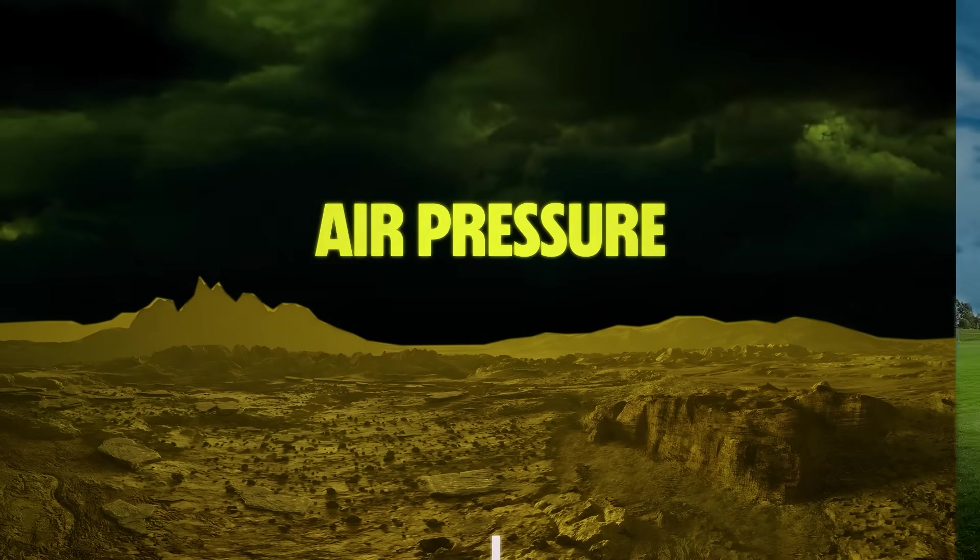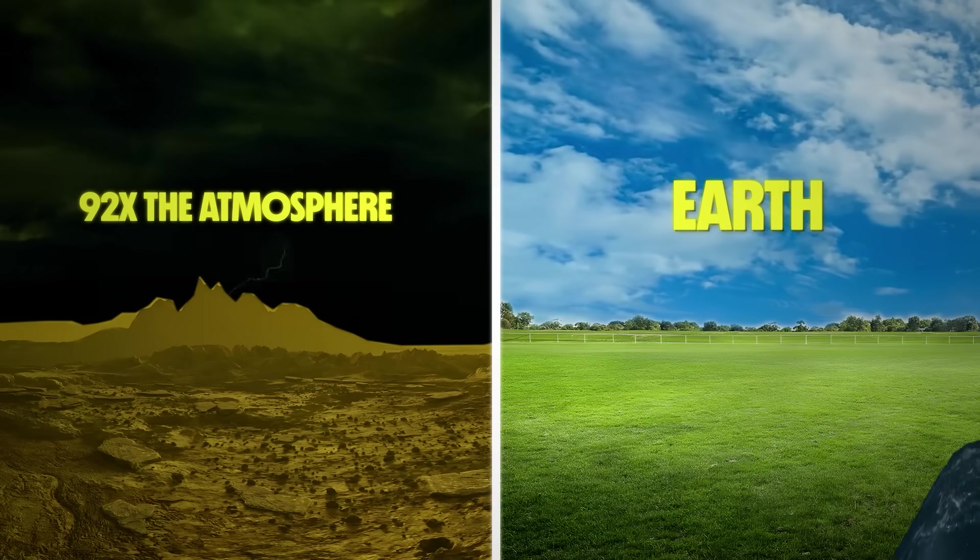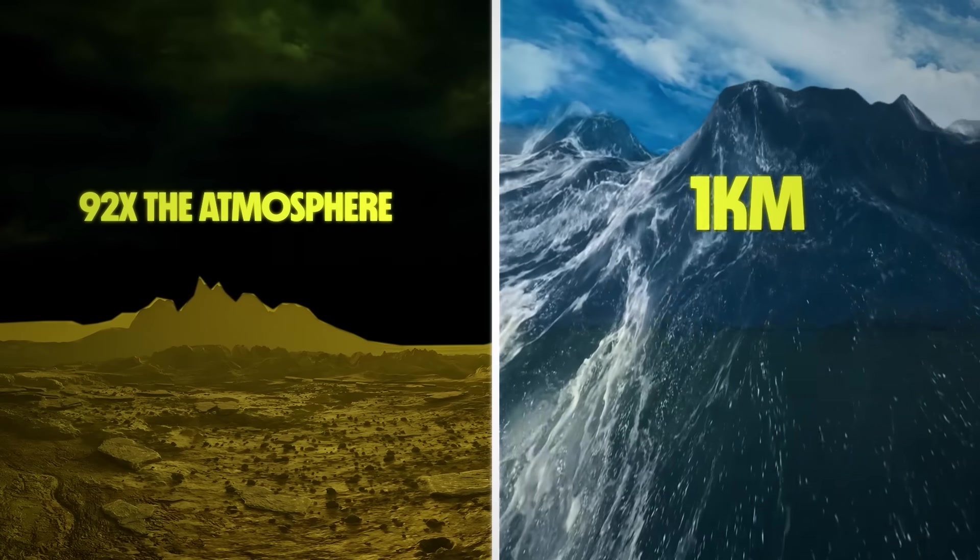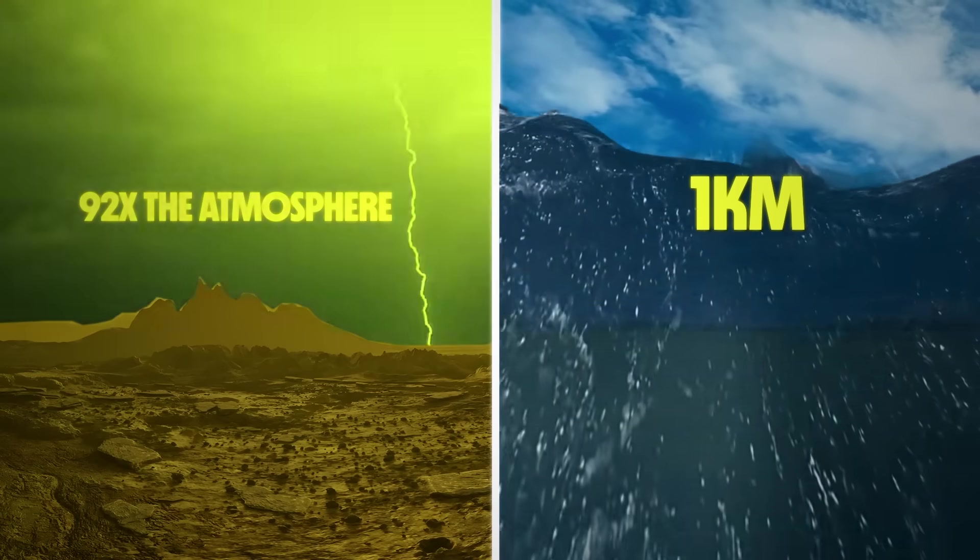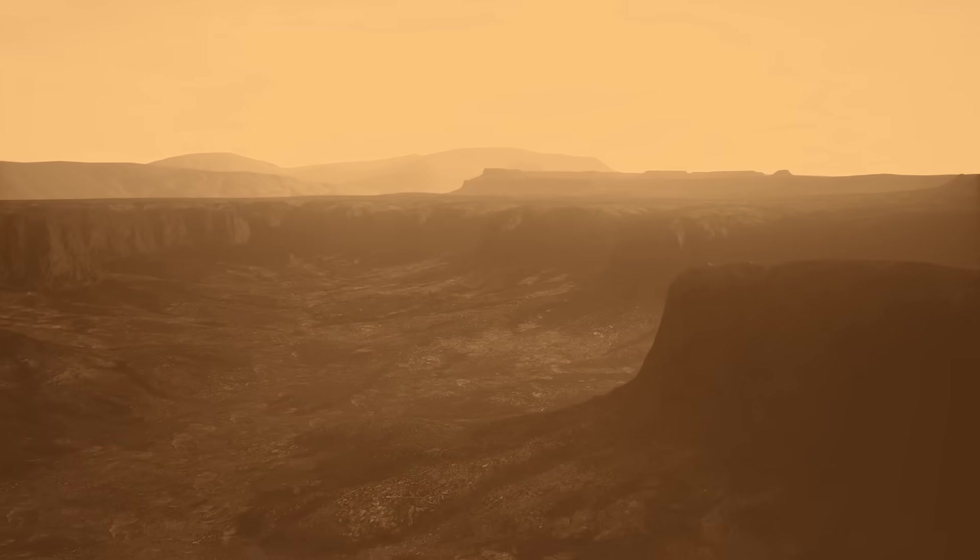So by now we know that in addition to the extreme temperature, the air pressure on the surface of Venus is the equivalent of 92 times the atmosphere on Earth, which is the same as being one kilometer underwater. And if that wasn't enough, the lower atmosphere is filled with sulfuric acid. That's the stuff inside a car battery.